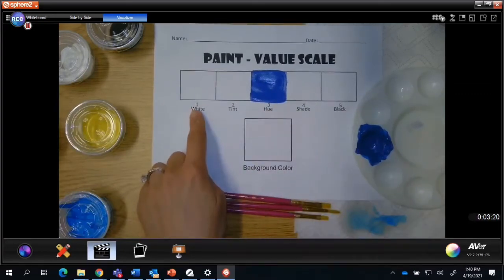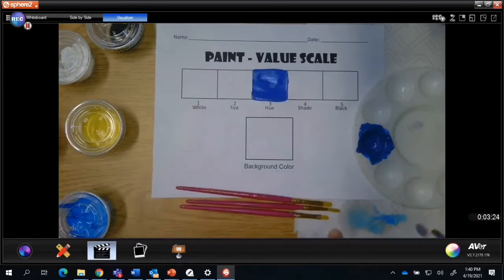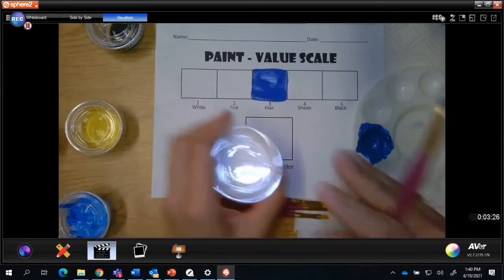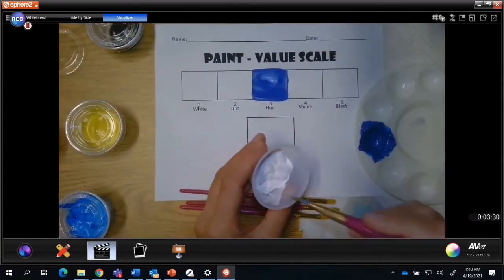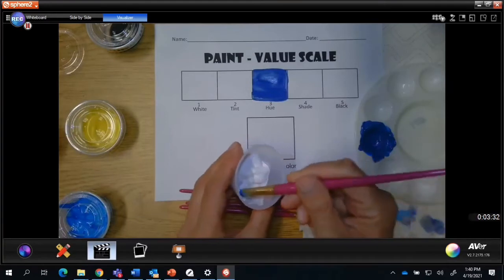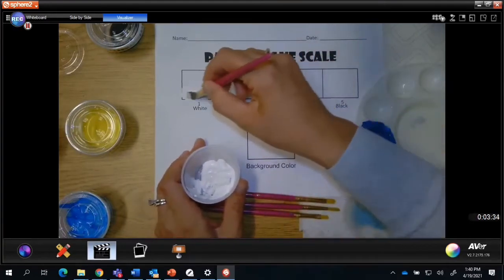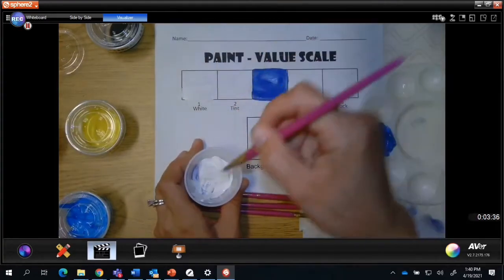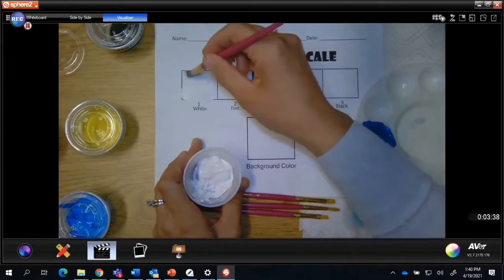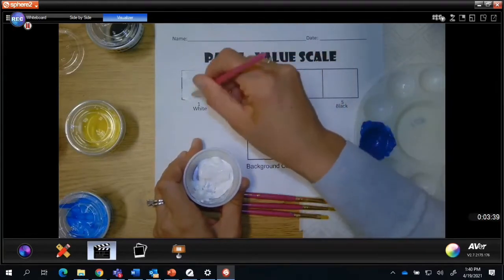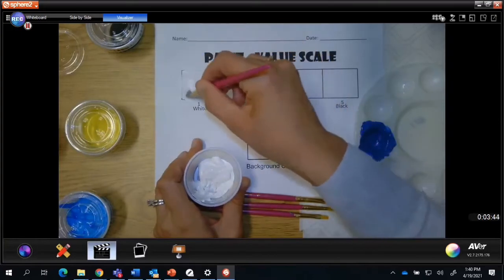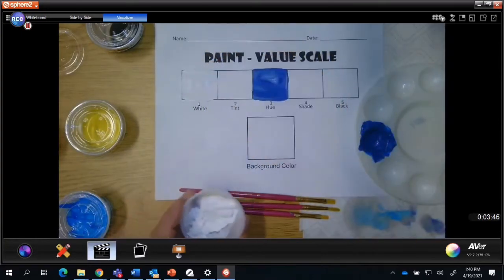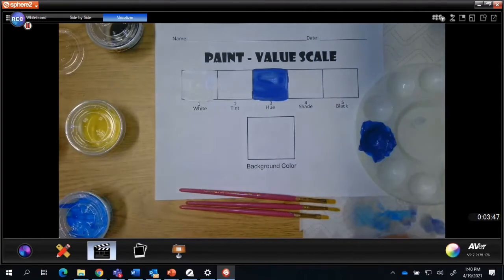Now I'm going to go over to my white and paint number one with my white color. I can use my white straight out of the container. Sometimes if your number three is a really dark color to begin with, you might want to make that number one just a little bit tinted so you don't end up with too much contrast.